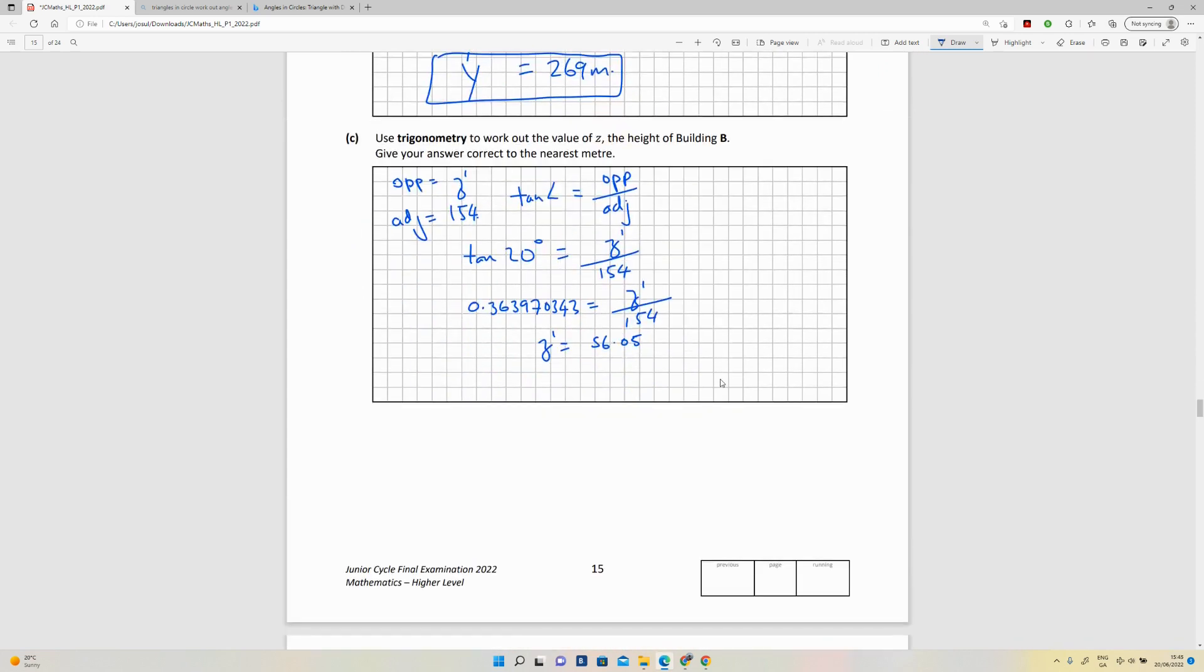So z, going back to the diagram above, is 220 plus z1. So I need to add. Z is equal to 56.05 plus 220 to give me 276.05. But they've asked for the nearest meter, so I'm just going to leave that as 276 meters. So that's my answer for z.